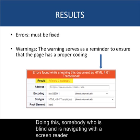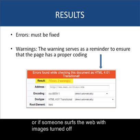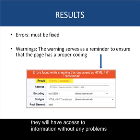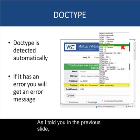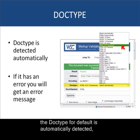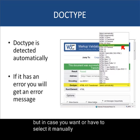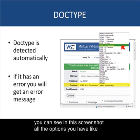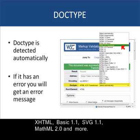By fixing these issues, someone who is blind and navigating with a screen reader, or someone browsing with images turned off, will have access to the information without any problem. As mentioned, the doctype is automatically detected by default, but in case you need to select it manually, you can see all the available options such as XHTML Basic 1.1, SVG 1.1, MathML 2.0, and more.